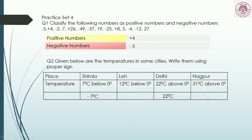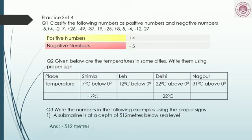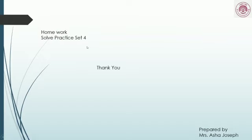The third question has four sub-questions; I'll do only one and you solve the remaining three. Write the numbers in the following example using proper signs: a submarine is at a depth of 512 meters below sea level. Since it is below sea level, it is a negative number — so the answer is −512 meters. That completes the first practice set, which you can solve as homework.